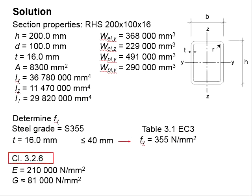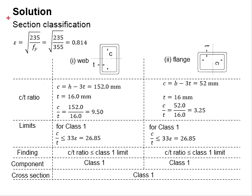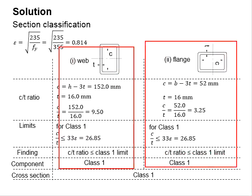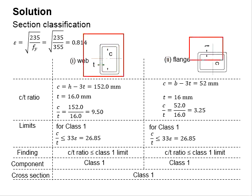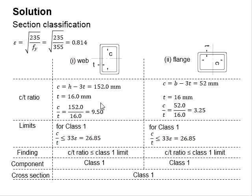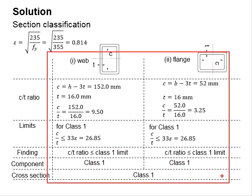Based on clause 3.2.6, obtain the modulus of elasticity and the shear modulus. Next, determine the classification of the member. With a yield strength of 355, substitute into the equation to get epsilon equal to 0.814. Then determine the c/t ratio for the web and the flange, as illustrated in the graphical presentation. The obtained c/t ratios are checked against the limits, and the entire section is found to be Class 1.